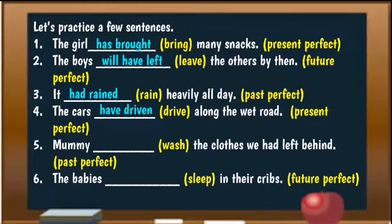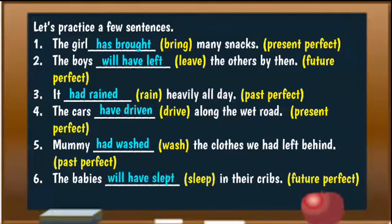Number five: mommy — here we have 'washed the clothes we had left behind' — past perfect: mommy had washed the clothes we had left behind. And our last sentence: the babies, in brackets we have 'sleep,' we have to form the future perfect. The babies will have slept in their cribs.